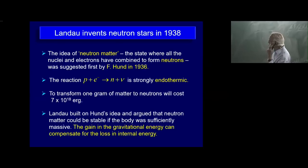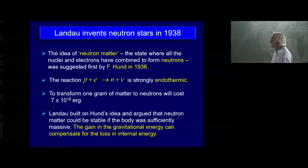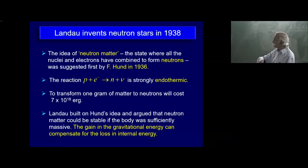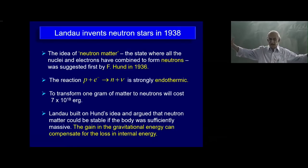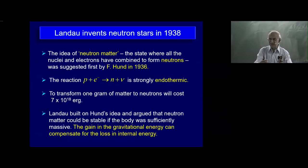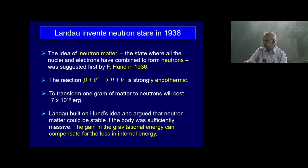Landau's brilliant idea was that under certain circumstances, the energy needed to convert protons to neutrons can be provided by the gravitational binding energy of a huge mass contracting to smaller and smaller radius. So GM squared over R will supply the energy that you need.